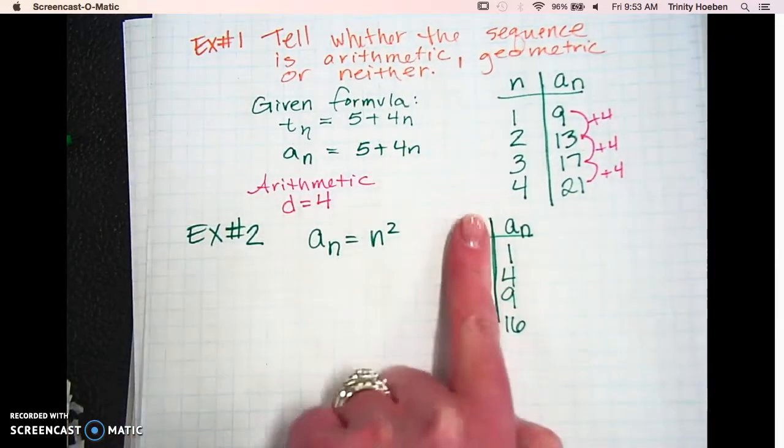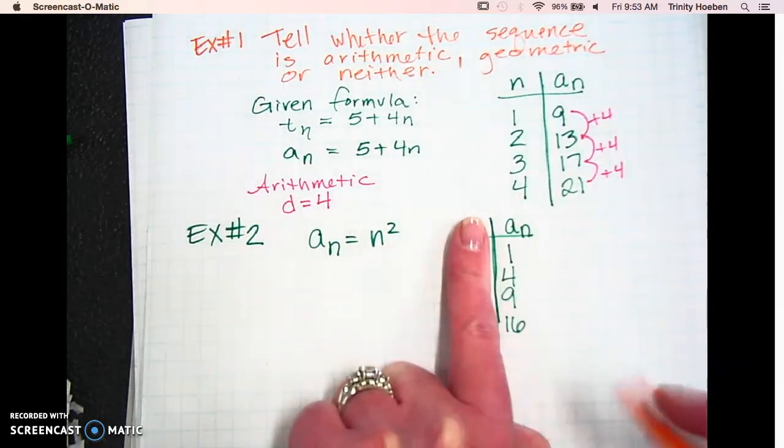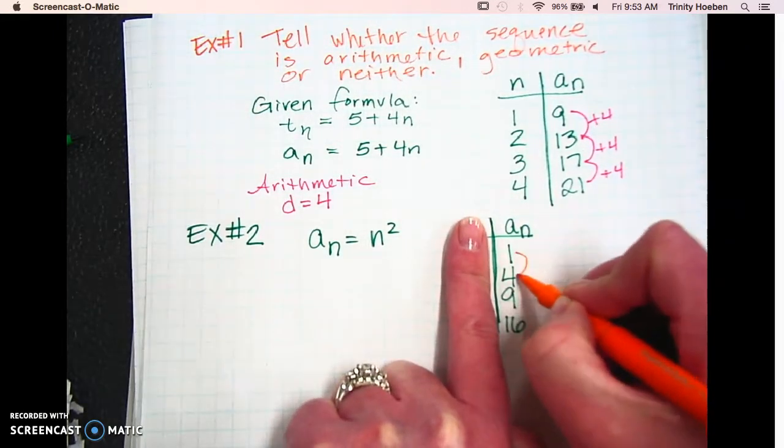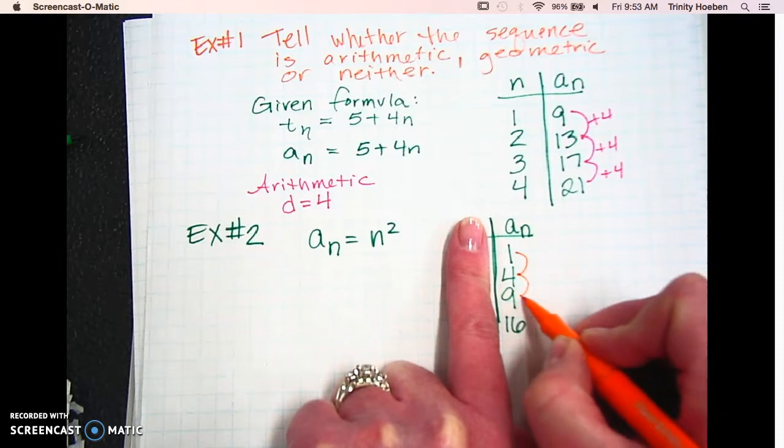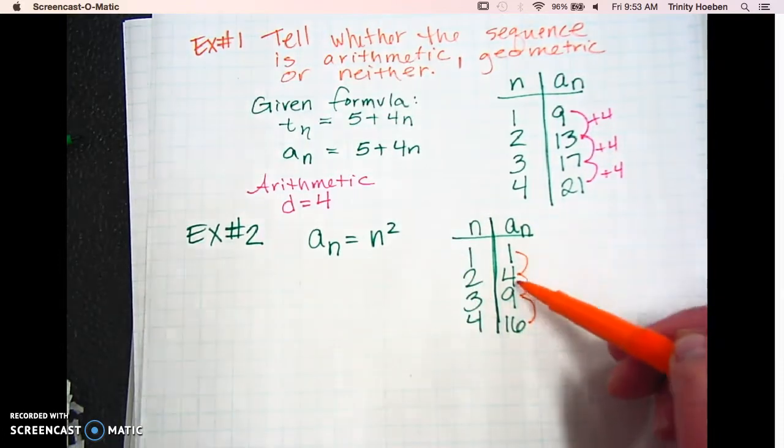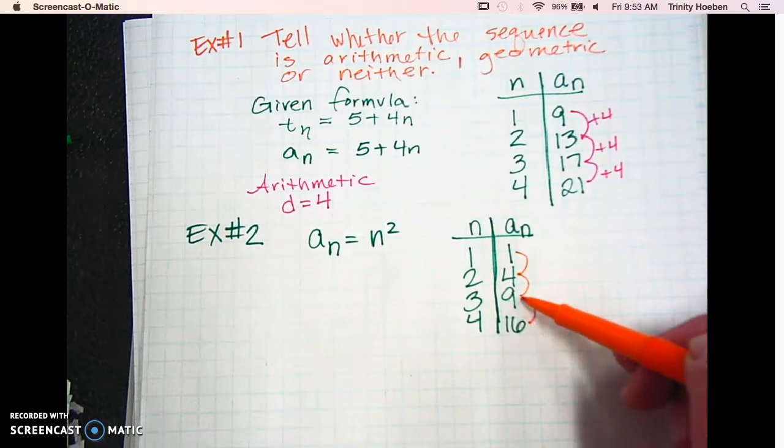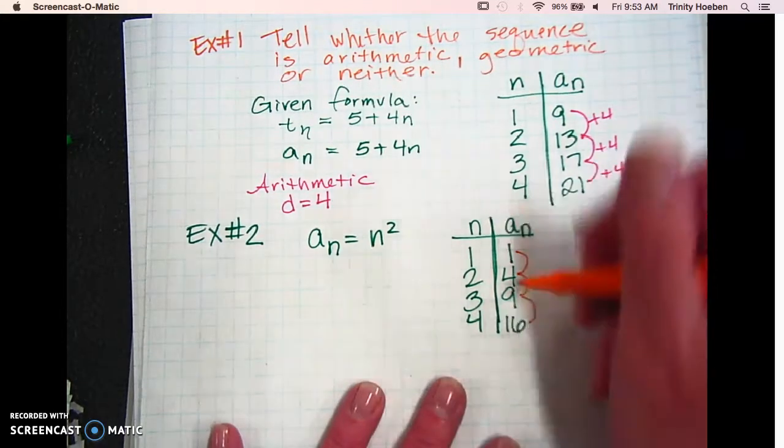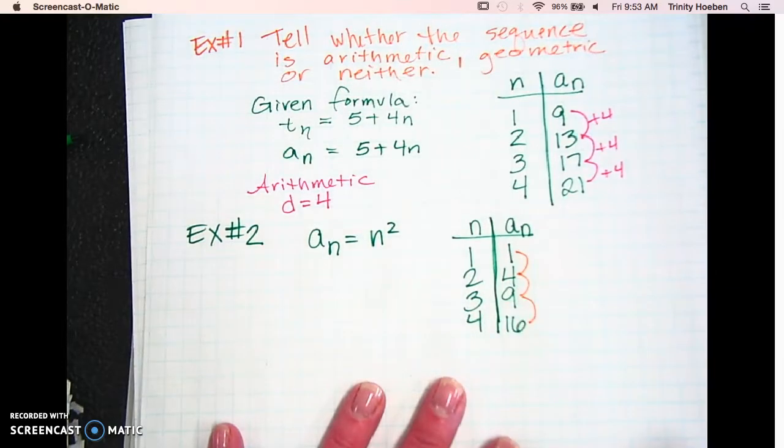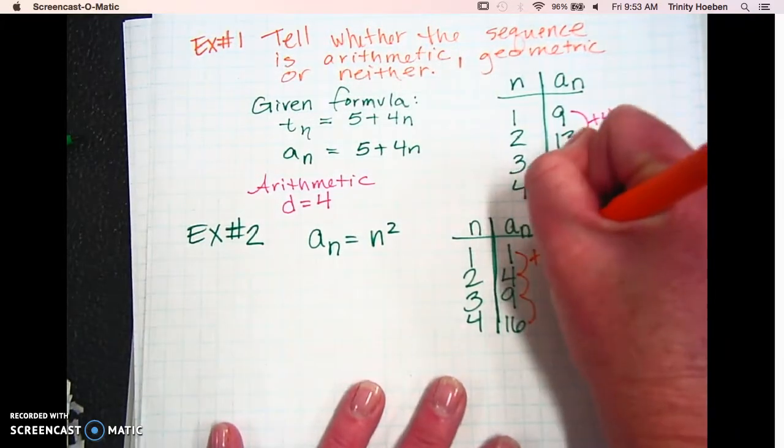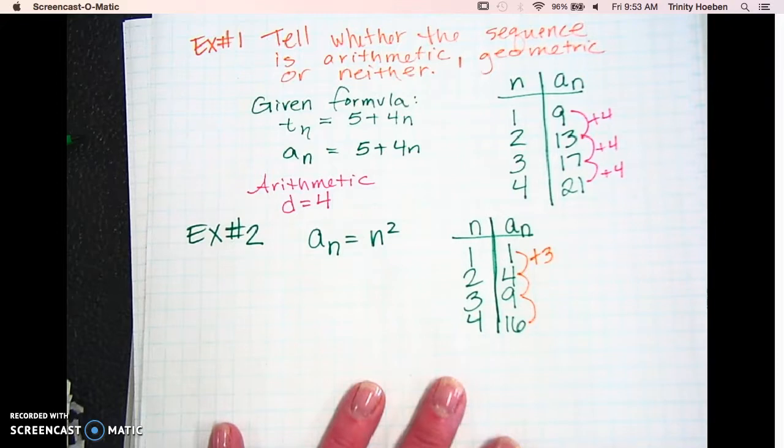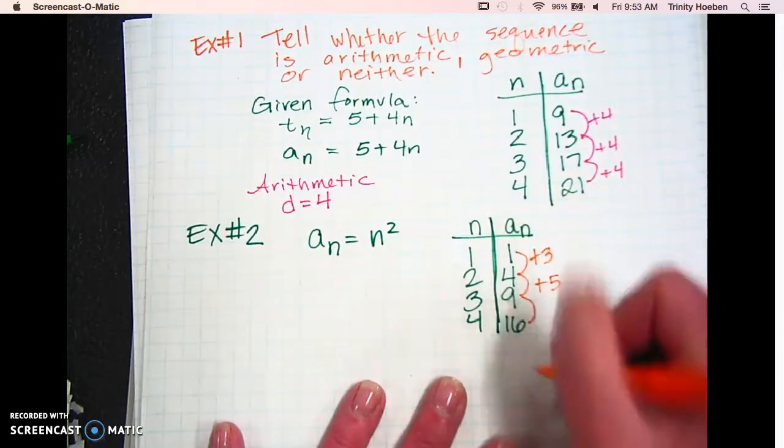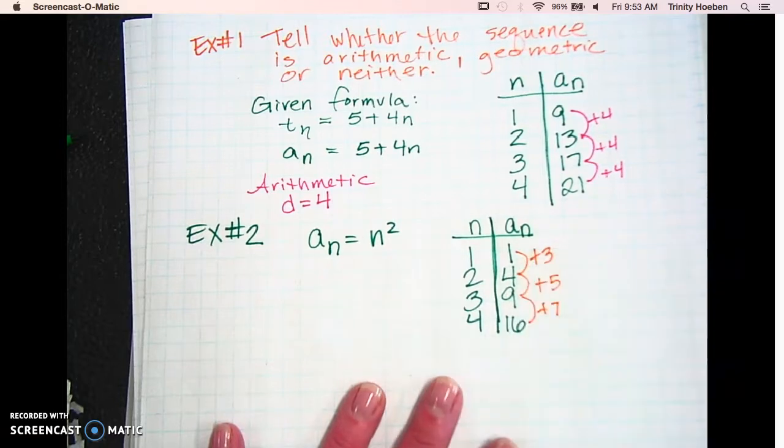Okay? So like I said, ignore this column. And look at from this column, what is happening between these numbers from 1 to 4, 4 to 9, 9 to 16. So from 1 to 4, you're adding 3. From 4 to 9, adding 5. 9 to 16, you're adding 7. So there's not a consistent.